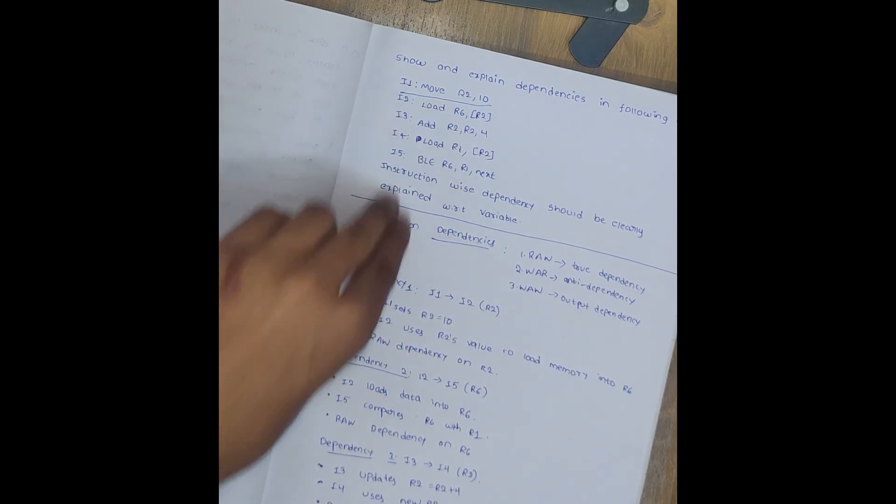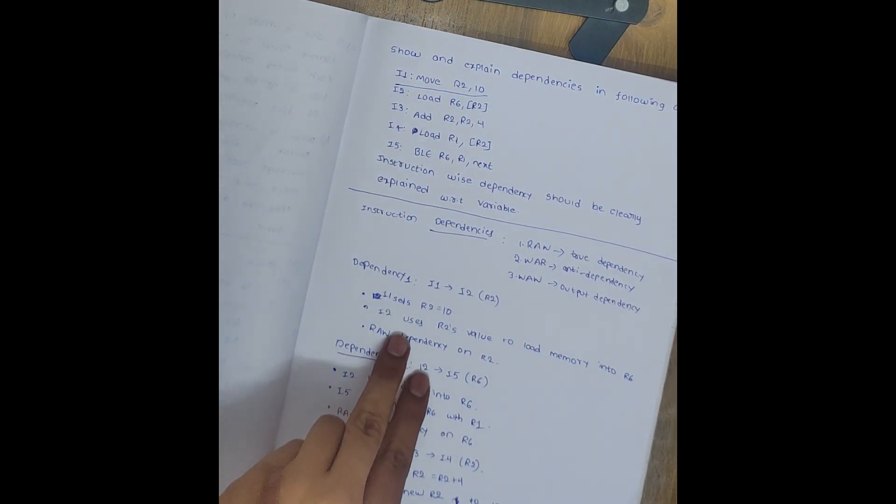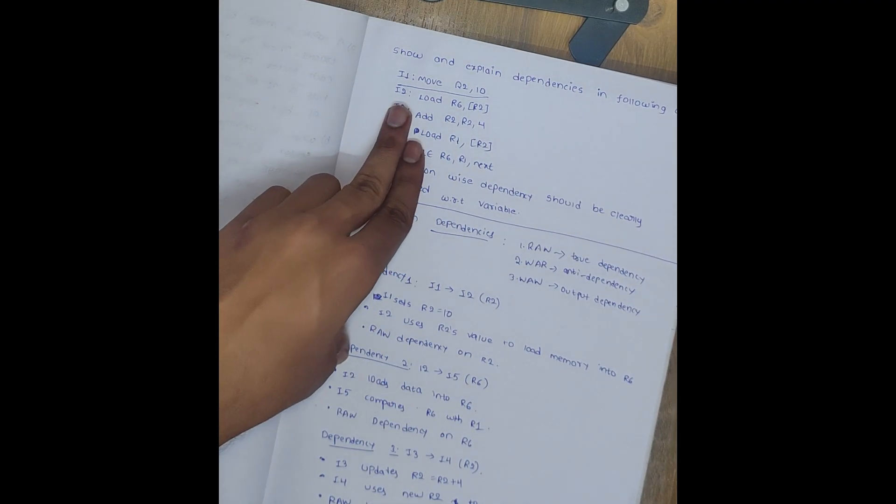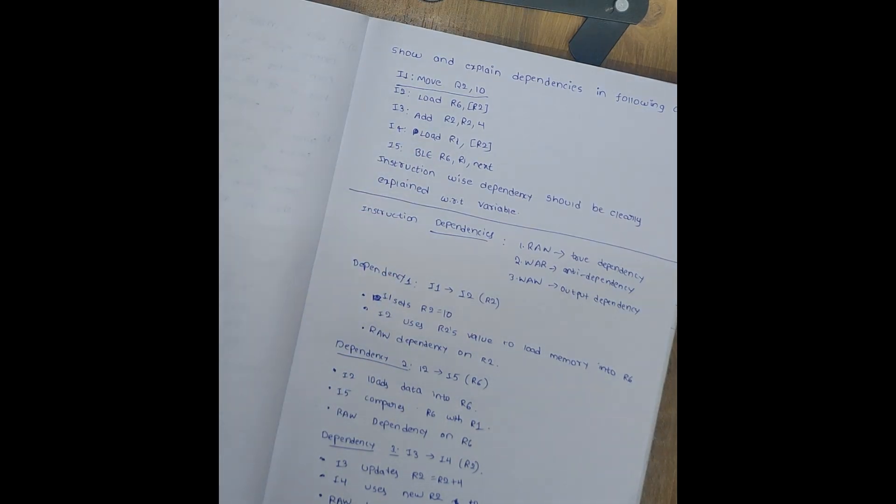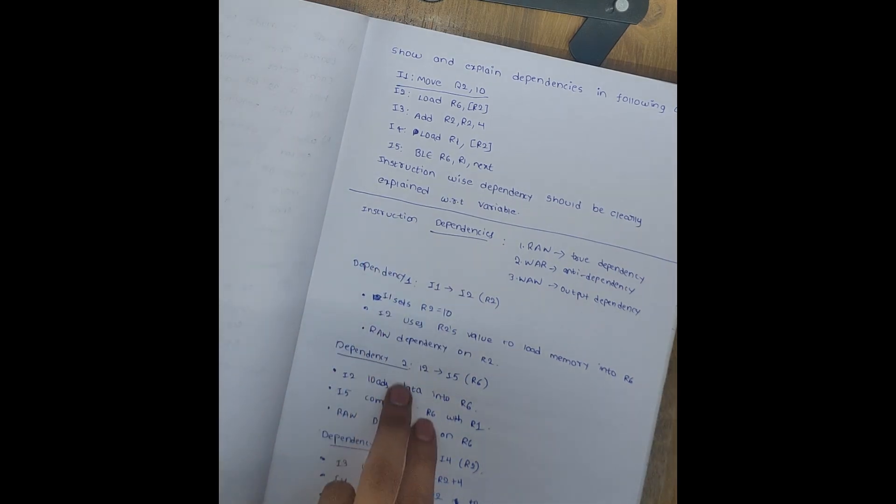So dependency is nothing but where it is depending. So what we can say in the final summary: I1-I2 is R2 dependency. And I2-I5 is R6 dependency. I3-I4 is R2 dependency. And I4 to I5 is R1 dependency.